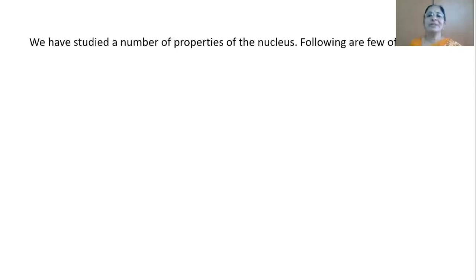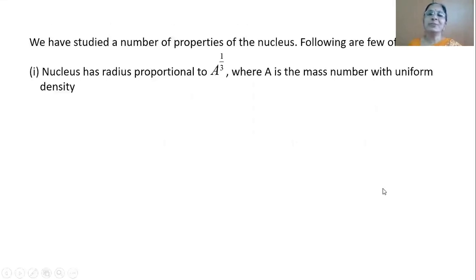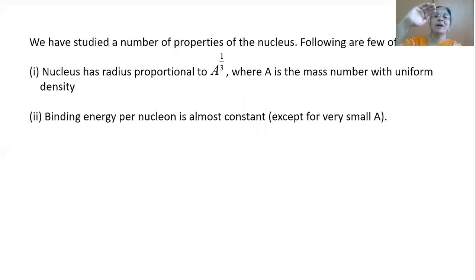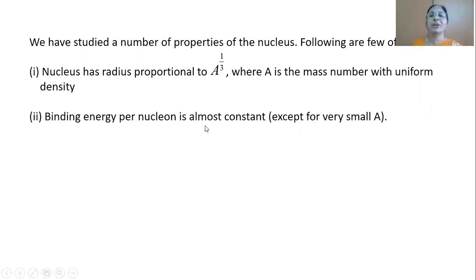In our earlier class we studied various properties of the nucleus. The radius of the nucleus is proportional to A to the power of 1/3, where A is the mass number, with uniform density. The binding energy per nucleon is almost constant. Recall the graph with binding energy per nucleon on the y-axis and mass number on the x-axis — it showed an initial sharp increase, then smoothly raised to a maximum, and for most elements in the periodic table binding energy per nucleon is almost constant, except for elements with very small A.